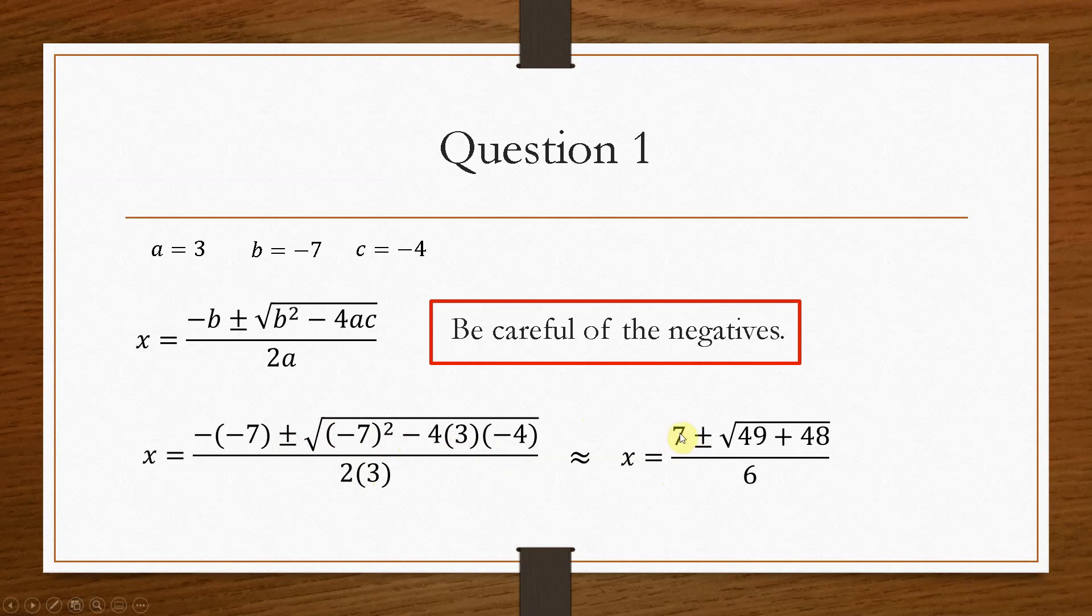So if we tidy this up, this becomes minus minus 7 becomes plus 7, plus or minus. Now minus 7 squared is 49, positive 49. And then minus 4 times 3 is minus 12 times by minus 4 will give you plus 48. And then that's all divided by 6.